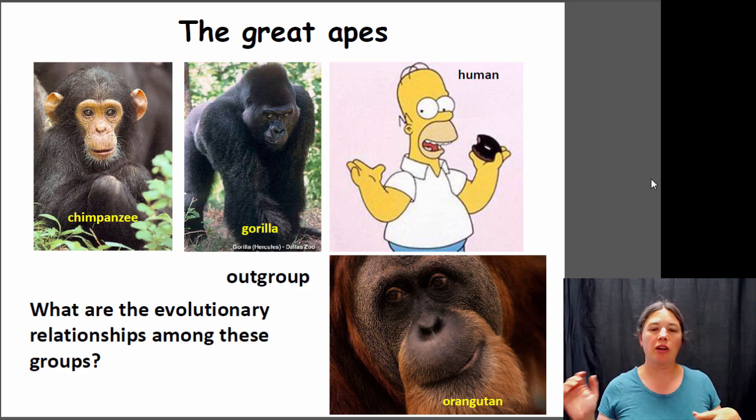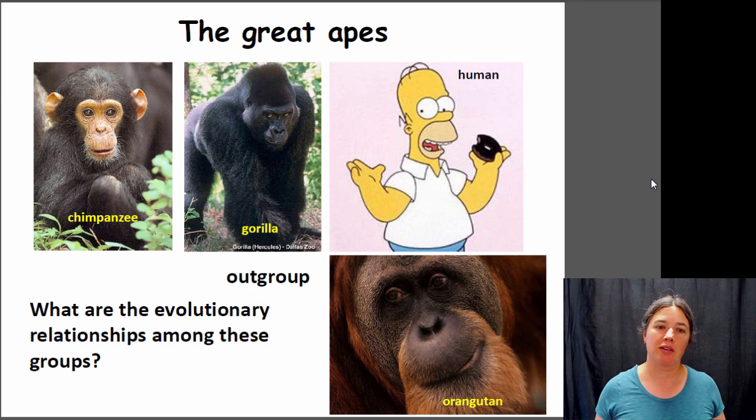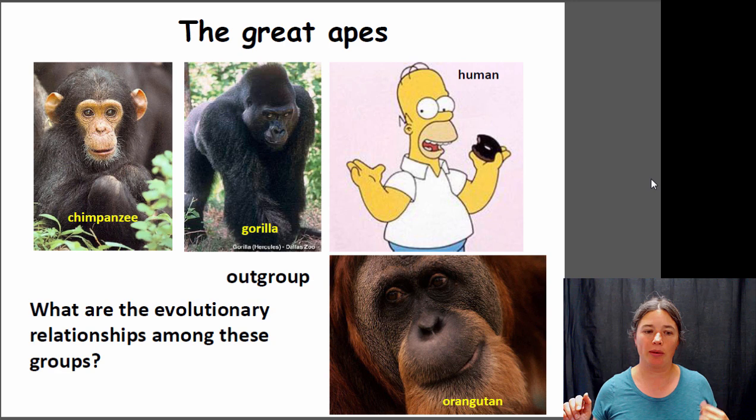We're going to focus on the chimpanzees, gorillas, and humans, and we're going to use orangutans as our outgroup because they're a more distantly related ape than the chimpanzees, gorillas, and the humans.